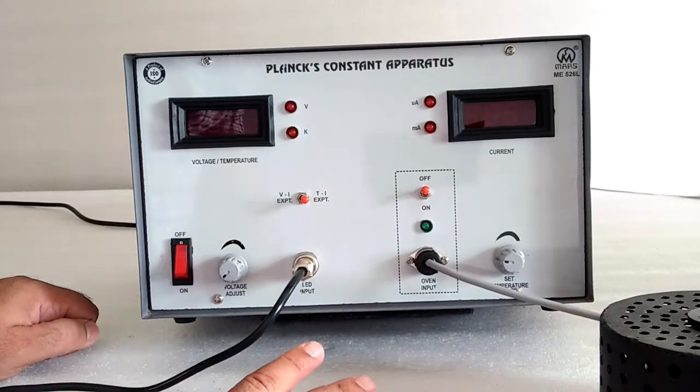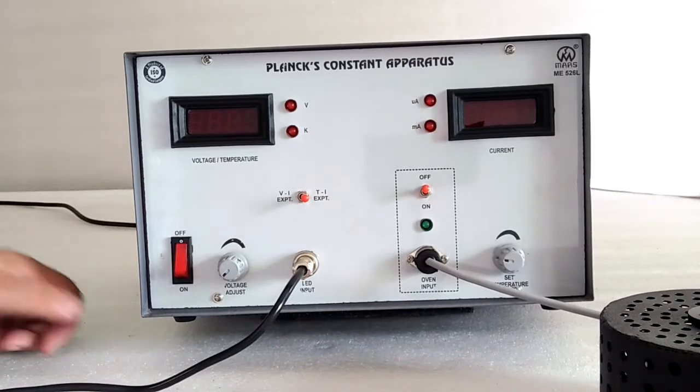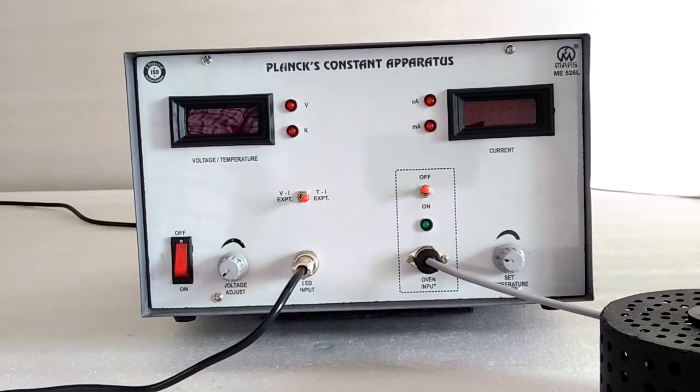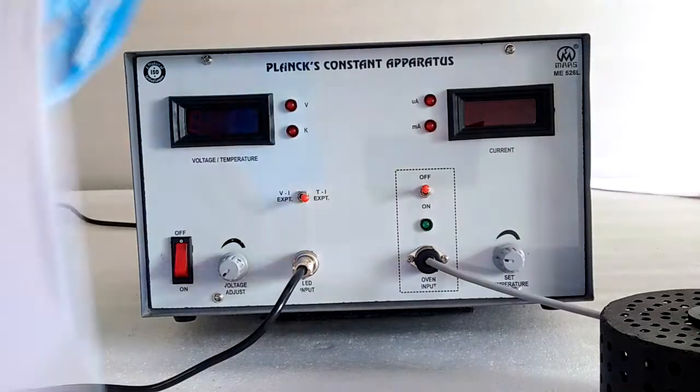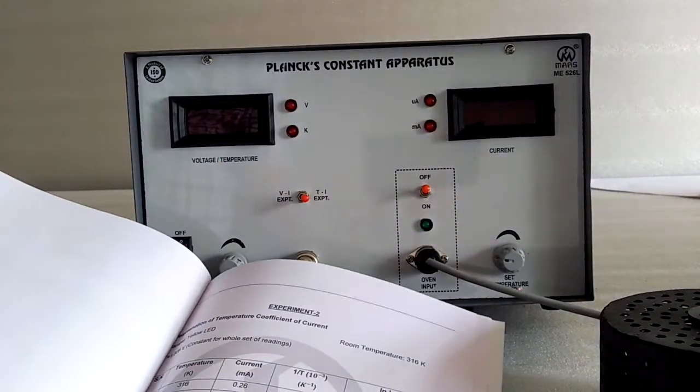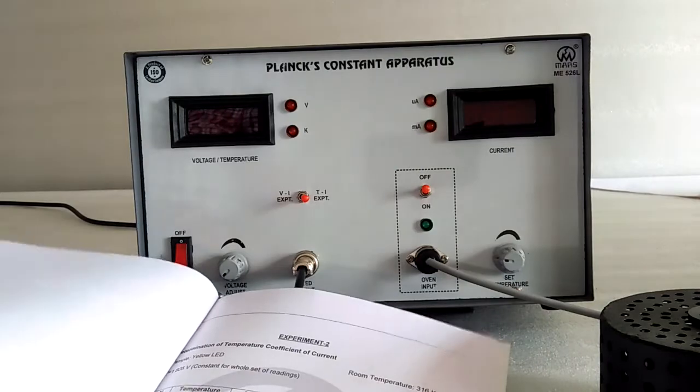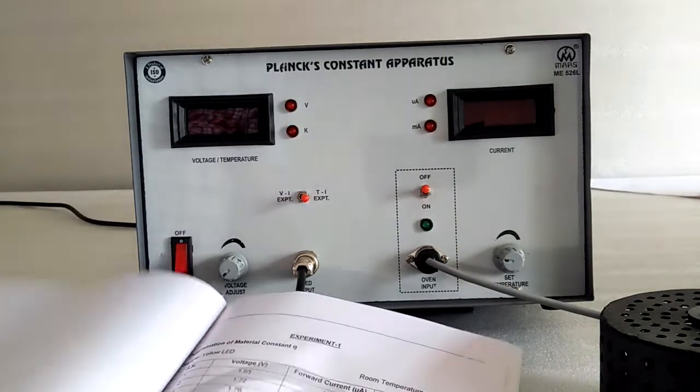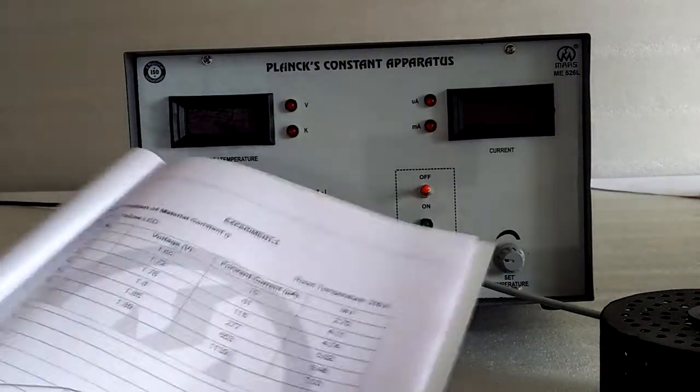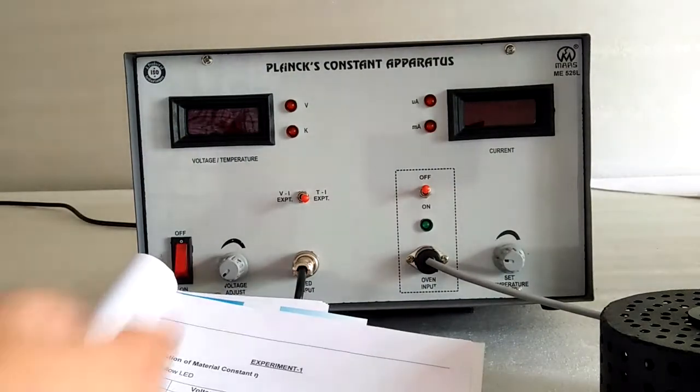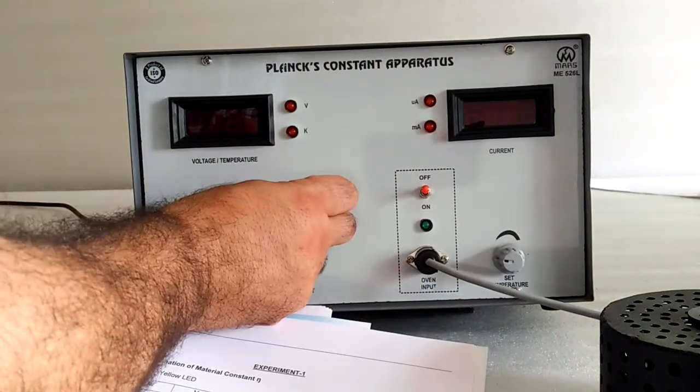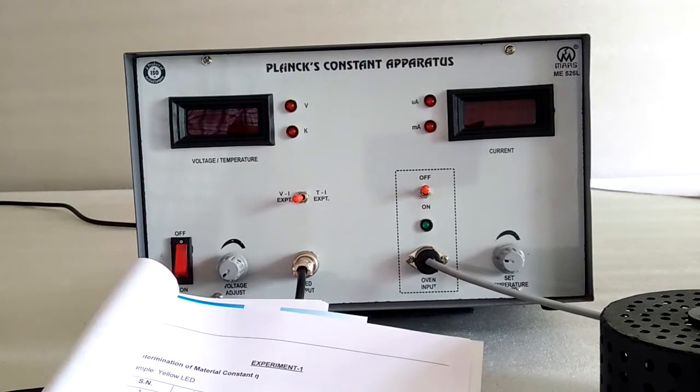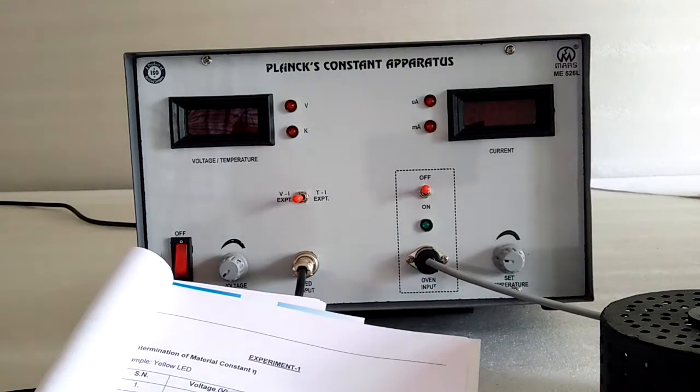To find the Planck constant in this kit, we have two graphs we have to make. Firstly, to find the material constant. To find the material constant, we have to make the characteristics voltage versus forward current.